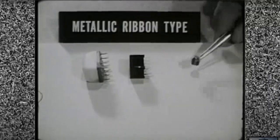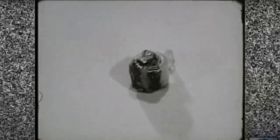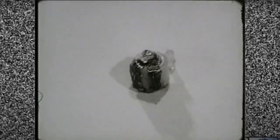The metallic ribbon type consists of a non-magnetic spool wound with a thin ribbon of highly magnetic alloy. This type is used in operating circuits of ADP systems.